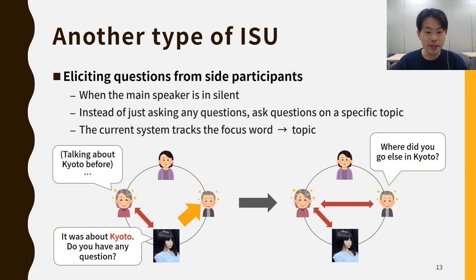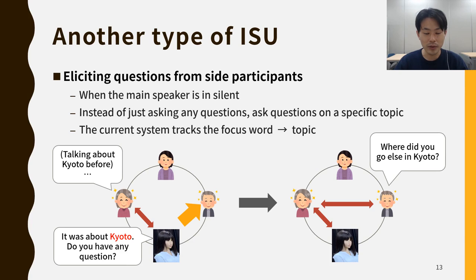We are also implementing another type of ISU, designed to elicit questions from side participants. When the main speaker is silent, the system asks questions on a specific topic instead of just asking any question. For example, when the main speaker was speaking about Kyoto, Erica would say, 'It was about Kyoto, so do you have any questions about that?' It is expected that the side participant can easily form questions because the topic is specified by the robot moderator. In the current system, the focus word is being tracked, and we use this focus word as a topic to generate this ISU.